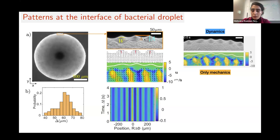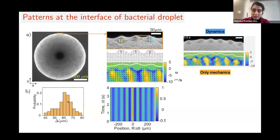What they found in the experiment is that the period delta is very well peaked around 60 micrometers, as you can see in the histogram. Another interesting observation is that at each of these protrusions, there is a plus-half defect. The defects in the protrusions form this lattice of velocity with up and down velocities. We can also do time averaging and spatial averaging to confirm that this is really periodic, and we see the periodic pattern in the average as well.